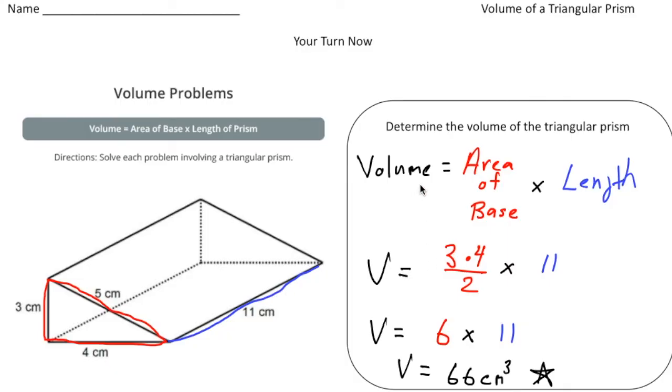So again, to find the volume of a triangular prism is the area of the base times the length. So to get the area of the base I did 3 times 4 divided by 2 and that's 6, and then to find the length, well it's given, it's 11. And then 6 times 11 gives us 66 cubic centimeters.